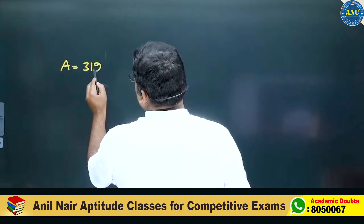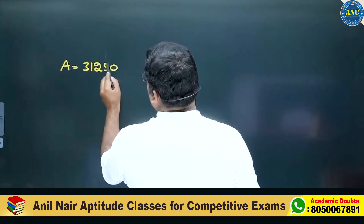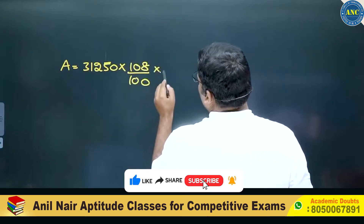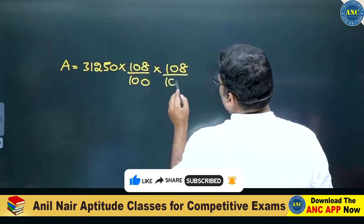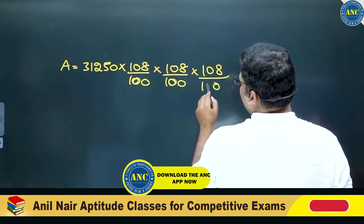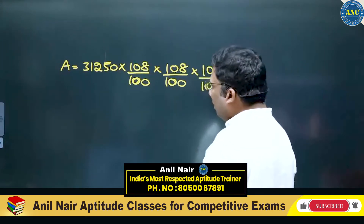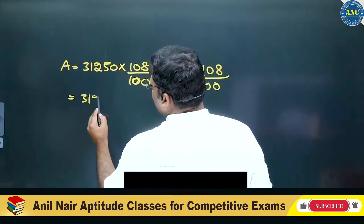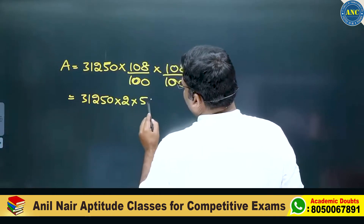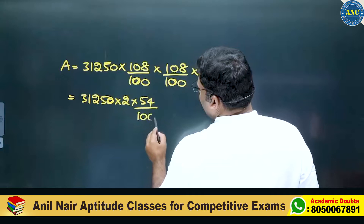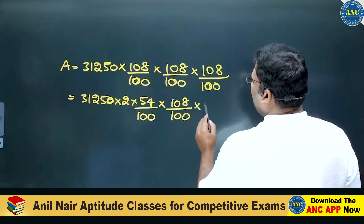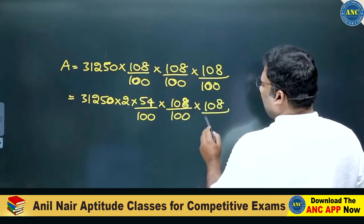Amount is 31,250 into 108 by 100, into 108 by 100, into 108 by 100, into 108 by 100. Jagra Thakirana Sir. So, ikkada neeno — 31,250 into 2 into 54 by 100, then 54 by 100 into 108 by 100 into 108 by 100 into 108 by 100.